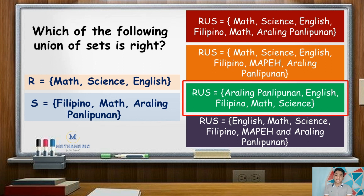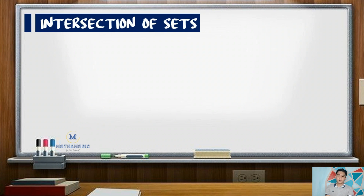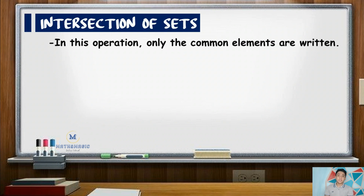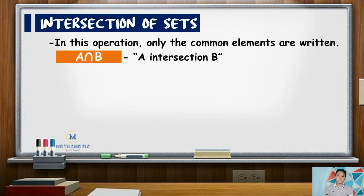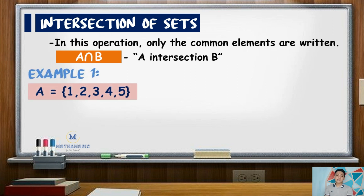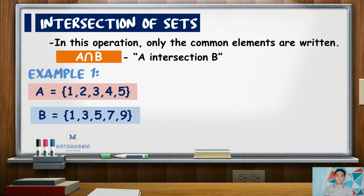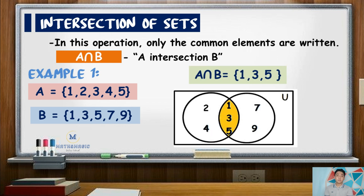After knowing the union of sets, let us now proceed to intersection of sets. In this operation, only the common elements are written — denoted by the intersection symbol and read as A intersection B. As an example, say set A has the elements 1, 2, 3, 4, and 5, while set B has the elements 1, 3, 5, 7, and 9. So to solve for A intersection B, it contains the elements 1, 3, and 5, since those are the common elements to both sets.